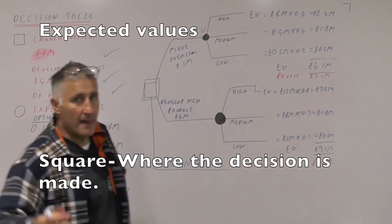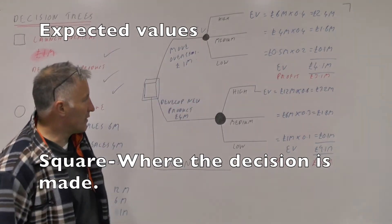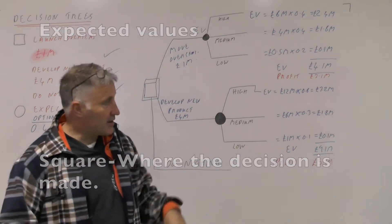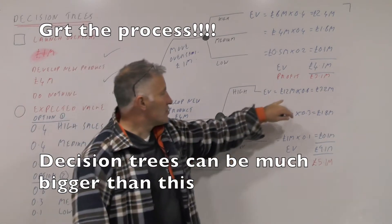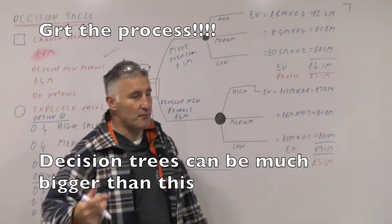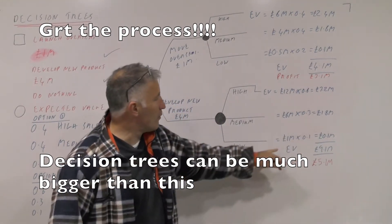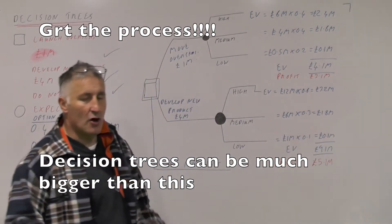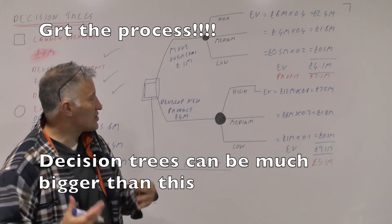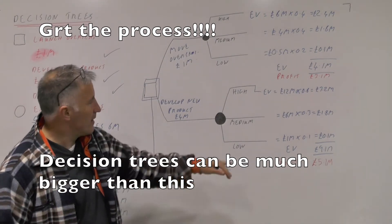The same again for expected value here: £12 million times 0.6 is £7.2 million, £6 million times 0.3 is £1.8 million, and £1.4 million times 0.1 is £0.14 million. We add them all up together, then we take away the £4 million, and we get £5.1 million.